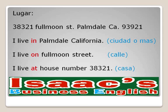Notice that we use 'in' to refer to the city because it is the broadest location in the address. Or we can say: I live in California, which is even broader. I live on Full Moon Street — now we are referring to the street, which is an intermediate point, lower than the city. I live at house number 38321 — now I'm specifying the exact point on the street where I live, so I use 'at.'